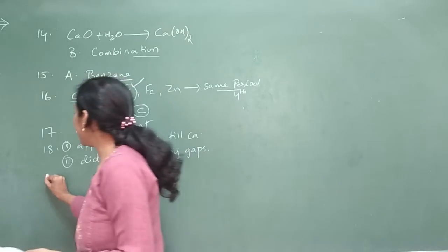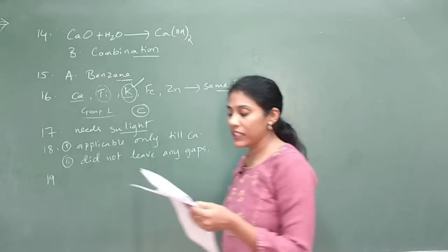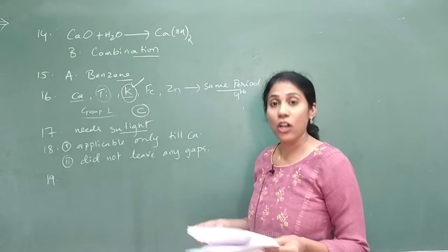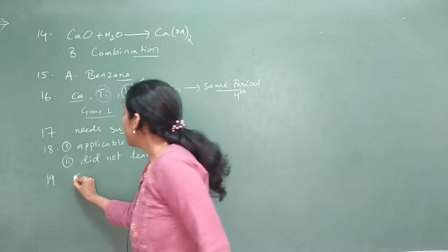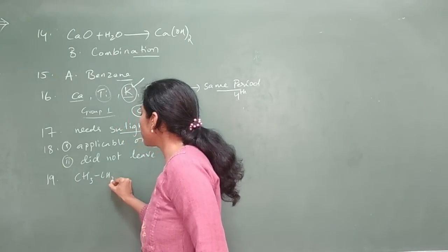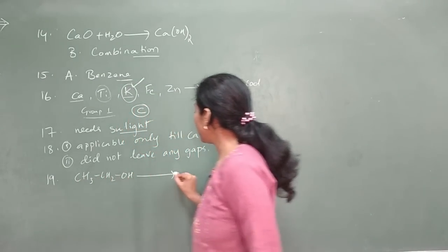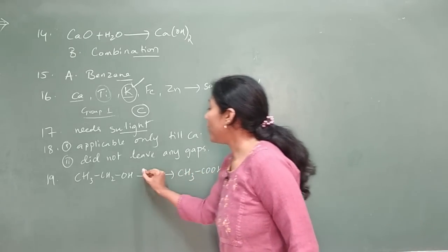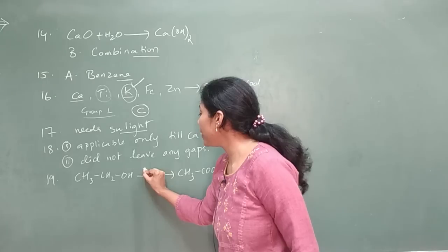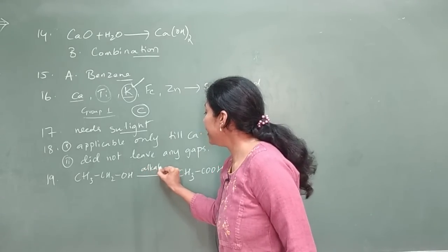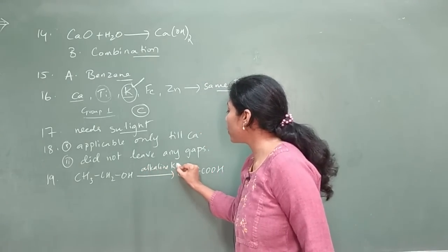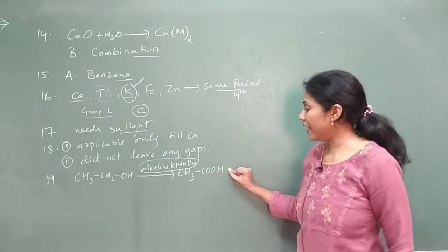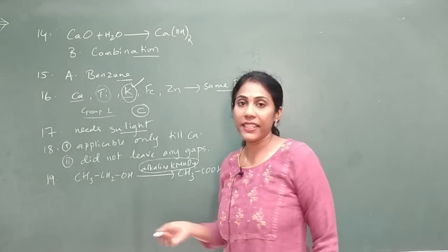Question 19: how can ethanol be converted into ethanoic acid? This is from the carbon and its compounds chapter — oxidation reaction. Ethanol (CH₃CH₂OH) should get converted into ethanoic acid (CH₃COOH). The reagent is alkaline KMnO₄. Write the chemical equation along with the reagent.